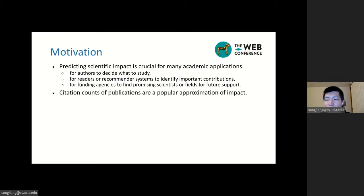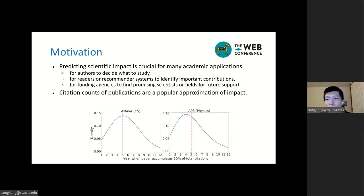Because the impact is very hard to quantify, citation counts of citation papers are usually used as an approximation of the citation impact. Many scientific papers have reached their peak impact in the first few years after publication. We draw a figure that shows the density of papers in view of the year when a paper accumulates 50% of their total citations. We check both the computer science papers and physics papers. The red line is the median and we can observe that more than half papers received their half citation counts in the first five years. So it is very important to predict the scientific impact in early stage.